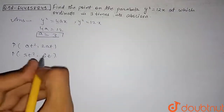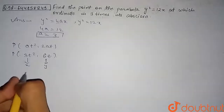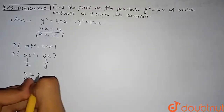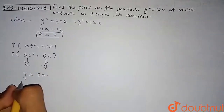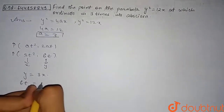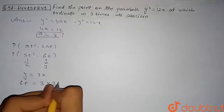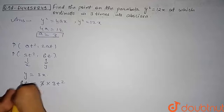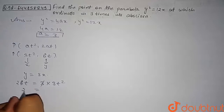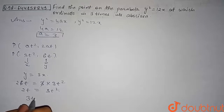According to our question, the ordinate is three times the abscissa, so y = 3x. Substituting the parametric coordinates, 6t = 3 × 3t², which gives 6t = 9t². We can cancel 3 from both sides, giving 2t = 3t².